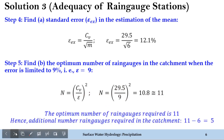So the optimal number of rain gauges required is 11. Kindly note: if the problem asks for the additional number of rain gauges required, the answer will be 11 minus 6, which equals 5 — because 6 gauge stations already exist. Subtracting the existing 6 from the optimal 11 gives us the additional number of rain gauges required, which is 5. I hope you were able to follow this problem.